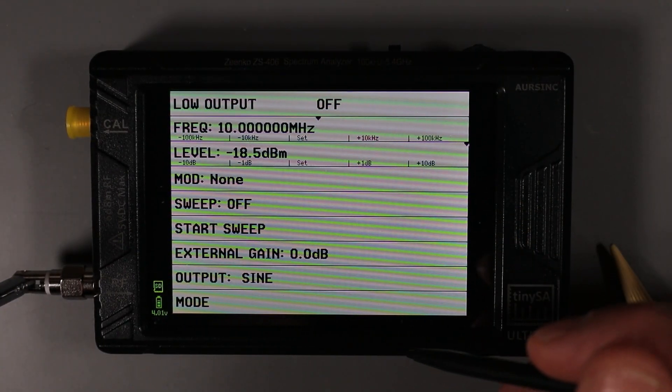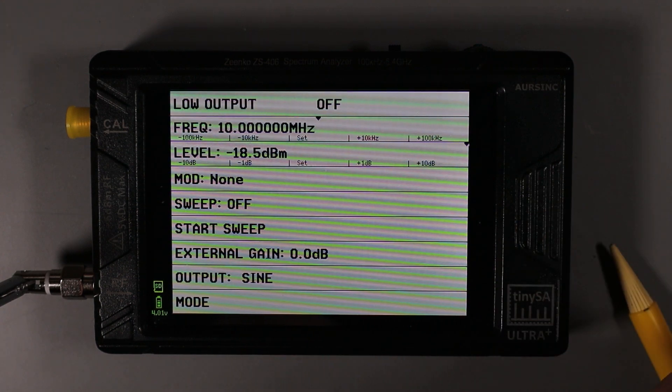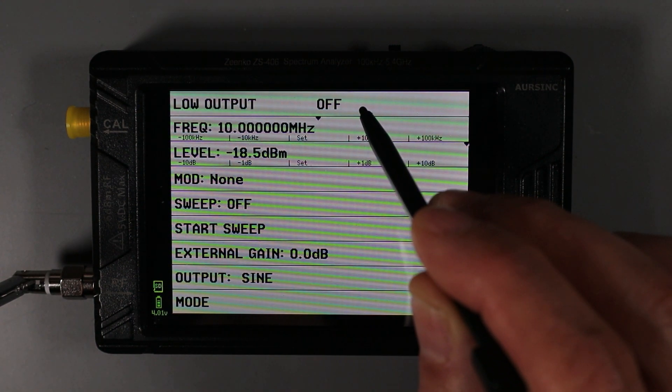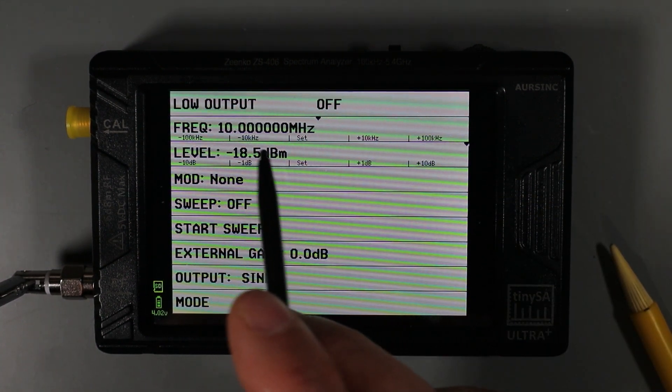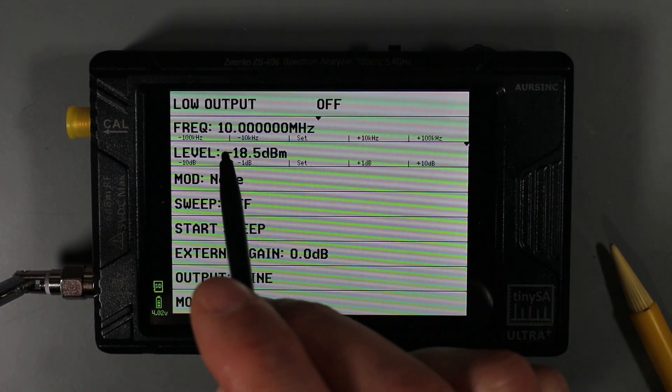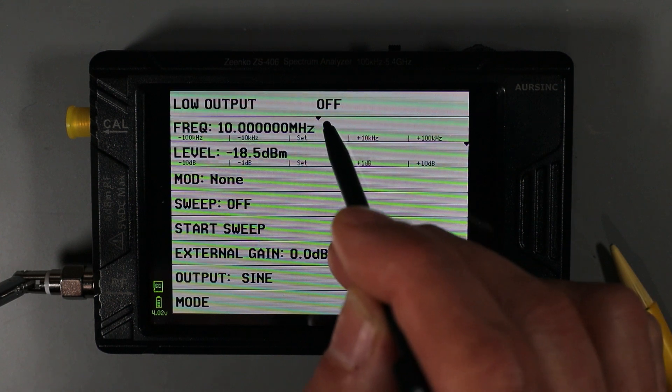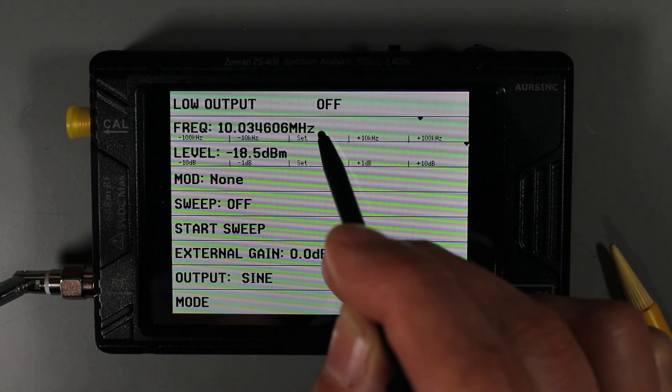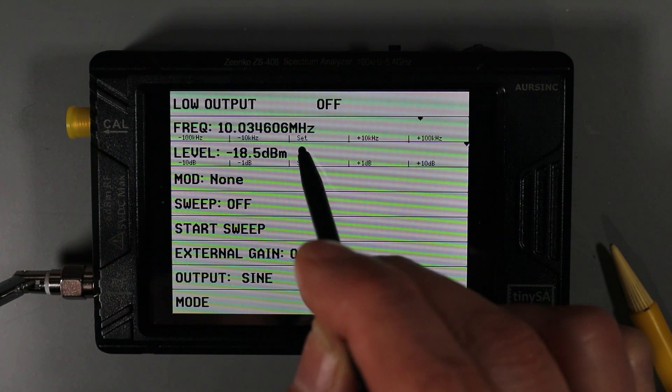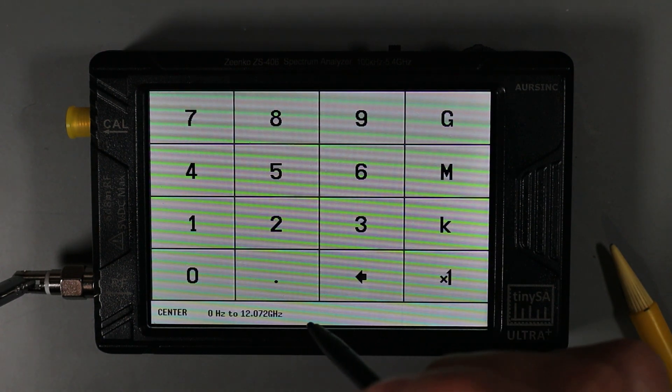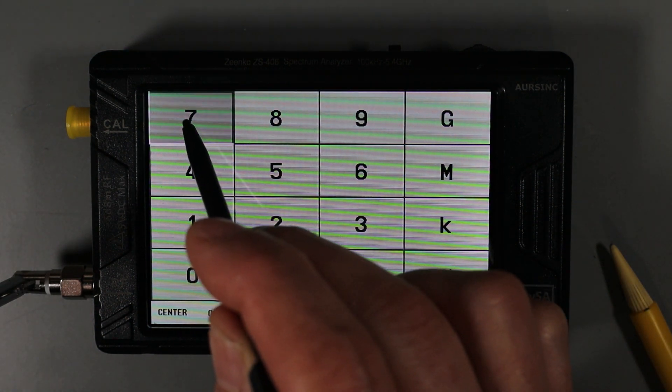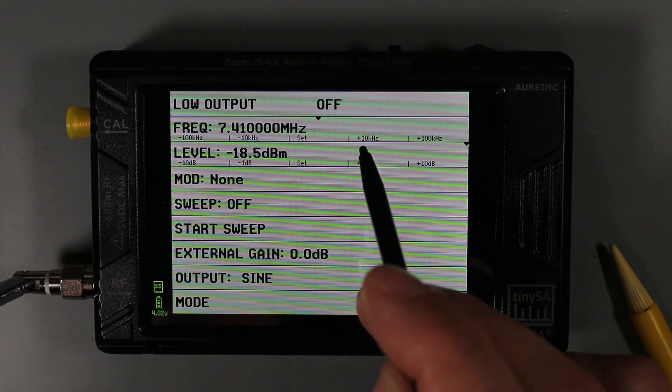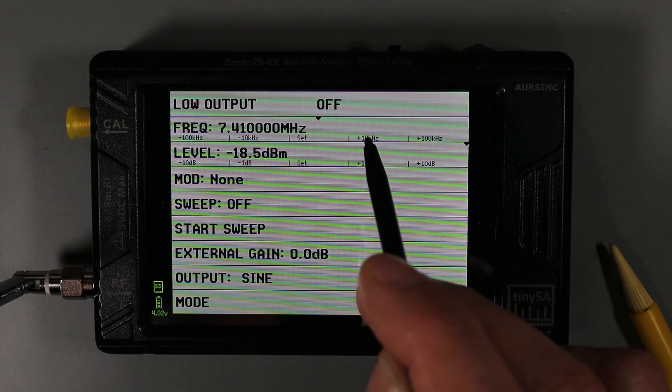Now we've got this page of options that we can set for the signal generator. This first option turns the actual signal generation on and off. The next field sets the frequency. You can see right now it's set to 10 megahertz. I can click and drag this slider to change the frequency, or I can click in the center where it says set, and I can enter in a specific frequency.